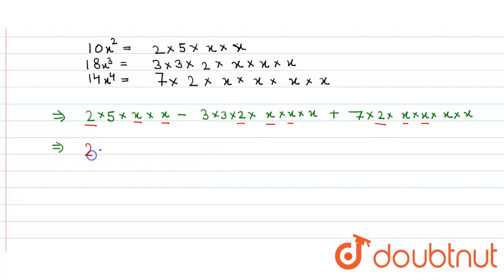So here we take common 2 × x × x, and in the bracket we get 5 - 3 × 3 × x + 7 × 2 × x.